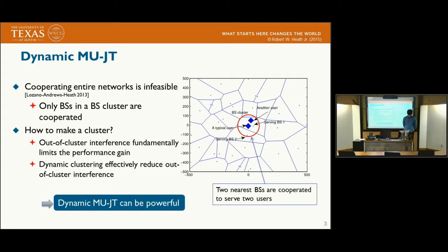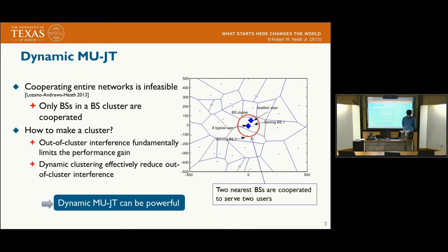We also consider dynamic clustering as the clustering-based BS cooperation method. It is well known that it is impossible to cooperate over an entire network due to the associated overhead. For this reason, the clustering-based cooperation approach is more practical, and dynamic clustering is known as an effective approach to reduce out-of-cluster interference. So the performance of dynamic multi-user joint transmission is worth investigating.